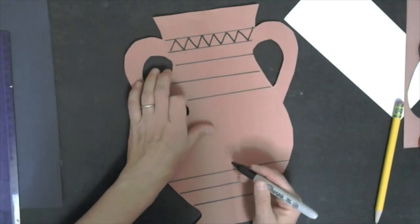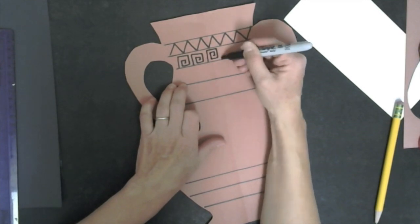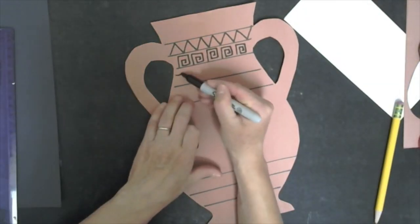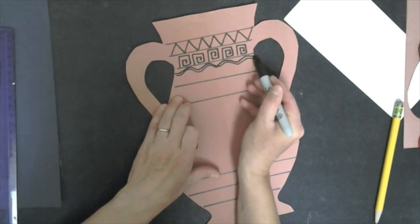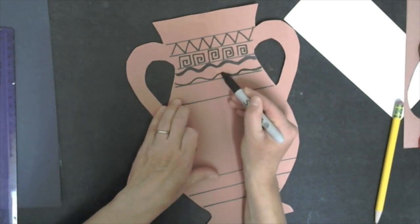In my case I have chosen the black figure technique. So all of my positive space will be in black including my figure and my patterns. Right now you can see that I am adding different patterns and line to create my vase.